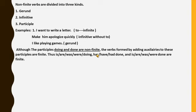Thus, is, are, was, were, doing, and has, have, had, done, and is, are, was, were, done, are finite. So when we add auxiliaries with doing and done, so they become finite. But doing and done are non-finite. Hopefully you have understood.